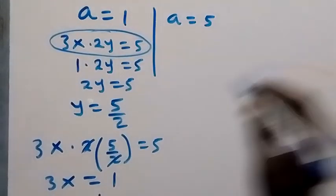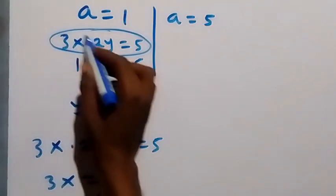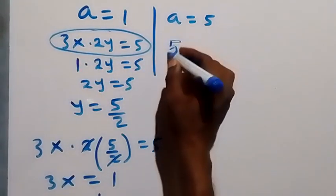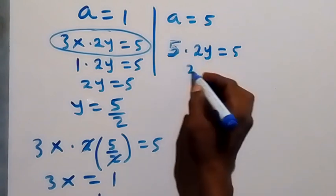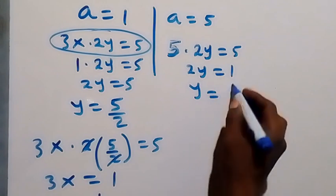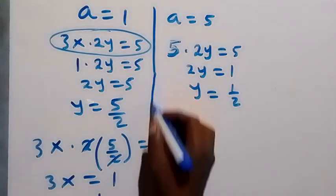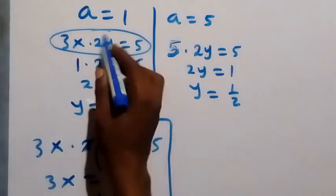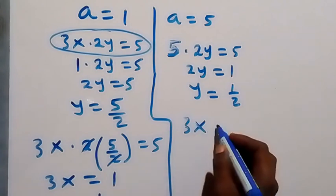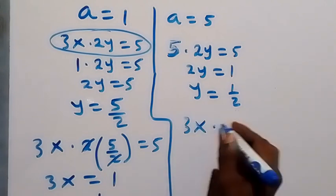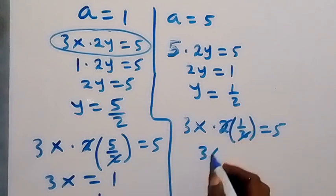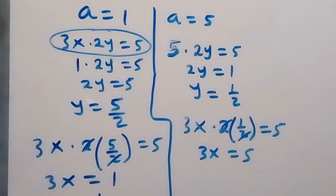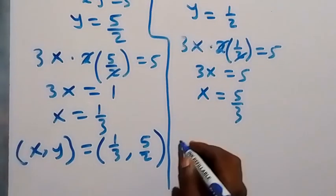For the second case, a equals 5, and since a represents 3x, we have 5 times 2y equals 5. Dividing both sides by 5, 2y equals 1, so y equals 1 over 2. Substituting y equals 1/2 back, 3x times 2 times (1/2) equals 5 — the 2s cancel, giving 3x equals 5, so x equals 5 over 3.